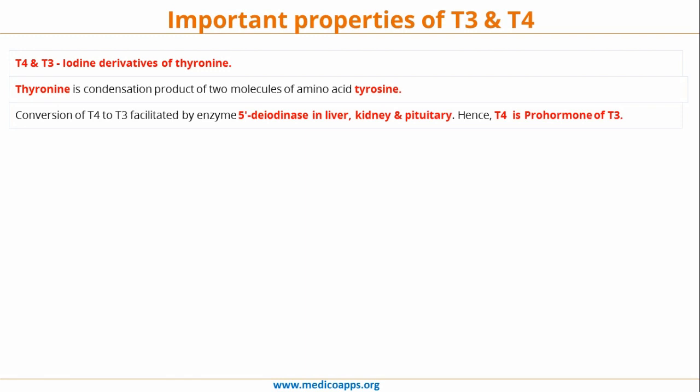Conversion of T4 to T3 happens in the liver, kidney, and pituitary, with the help of the 5-deiodinase enzyme. Therefore, T4 is considered to be a pro-hormone for T3. T3 is hence called the principal thyroid hormone mediating the metabolic effects.